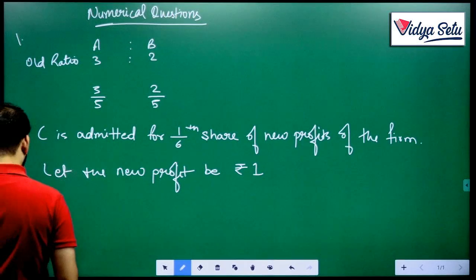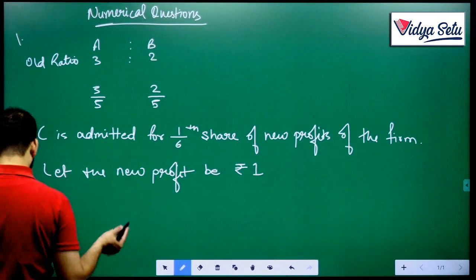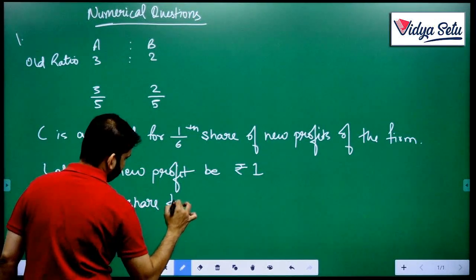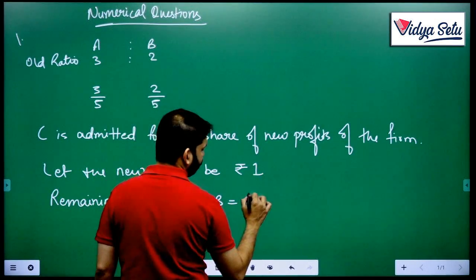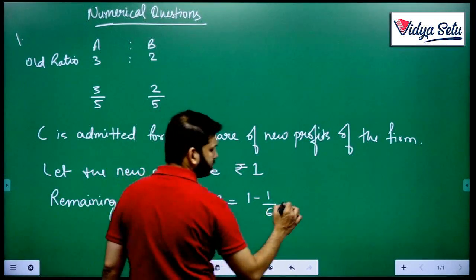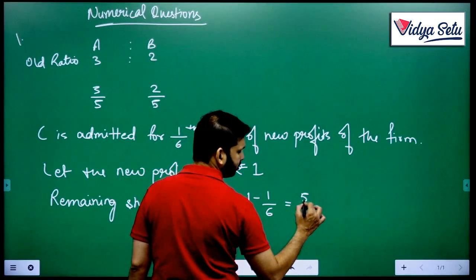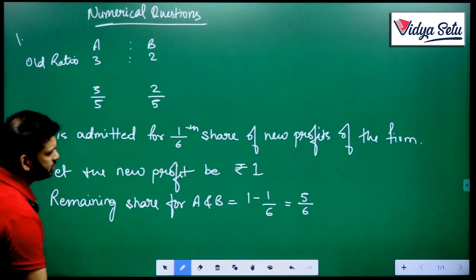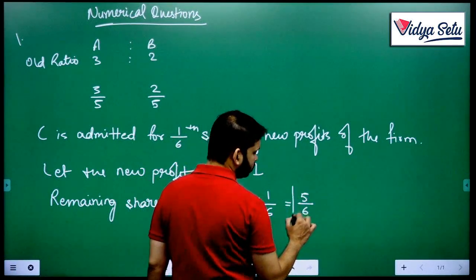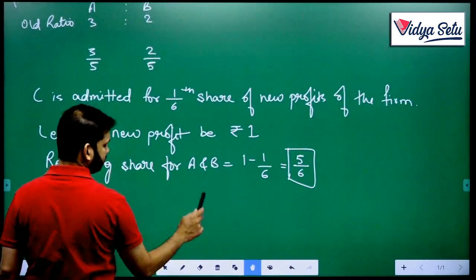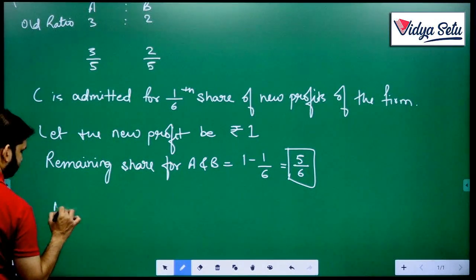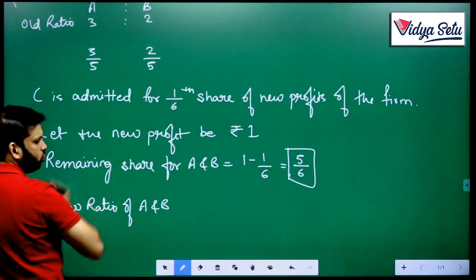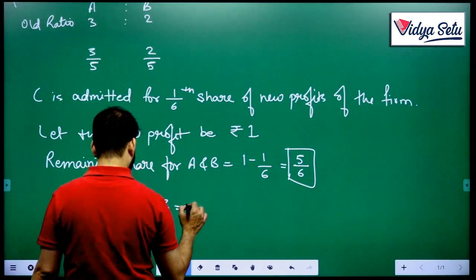If we assume the entire profit to be 1, C's share will be 1/6. How much is remaining for A and B? C's share of 1, 1/6 will be taken by C. So how much is remaining? 1 minus 1/6 equals 5/6. This 5/6 is remaining for A and B, and A and B will be taking this 5/6 divided in their old ratio. We need to find A and B new ratio. We already know C. The formula is remaining ratio multiplied by old ratio.